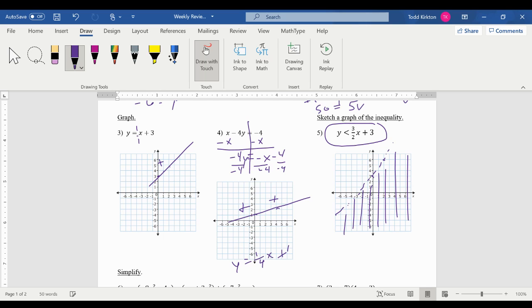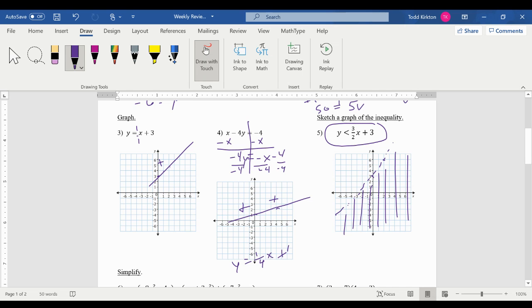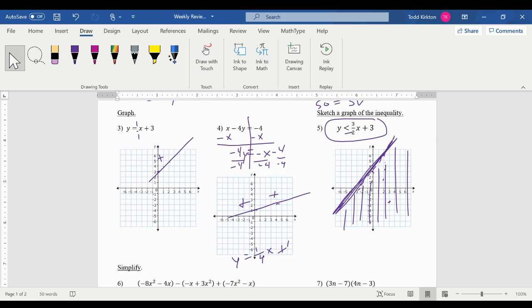So the question that could be asked here is which points are solutions. So any point you plot would be a solution if it's in the shaded area. Any point on the line in this case would not be a solution. If there was an equal sign, any point on the line would be a solution, and this would be solid.